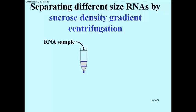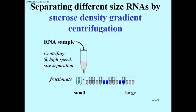You get a separation of blue material which in this case represents different size classes of RNA. In the real world when we do this, it's in a plastic tube and we puncture the bottom of the plastic tube so that we can drip material out of the tube and collect it in a series of test tubes fractionating the gradient.